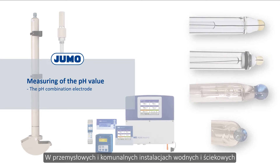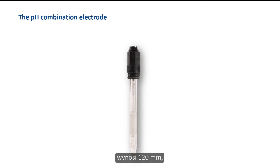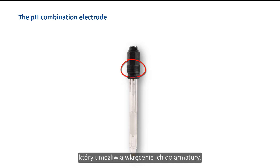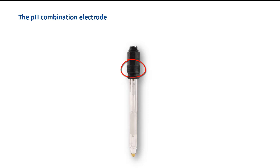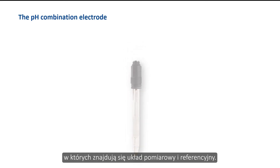In industrial and municipal water and wastewater plants, combination electrodes are generally used for online measurements. The standard installation length of the combination electrodes is 120 mm, and the electrodes usually have a PG13.5 external thread which allows them to be screwed into a fitting. The electrodes have two chambers which house the measuring and reference systems.